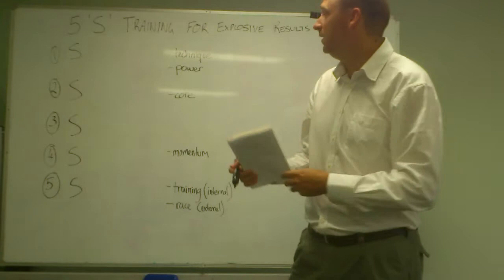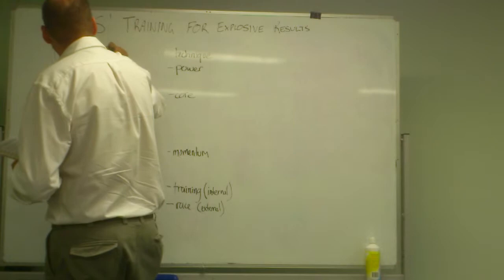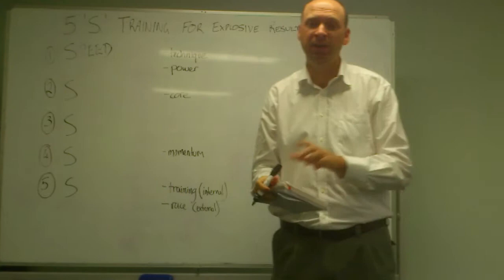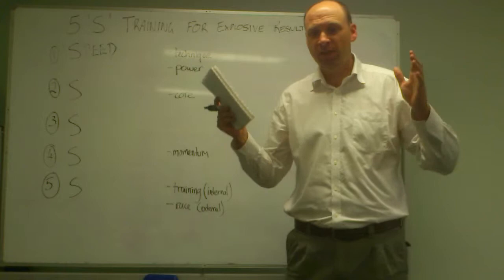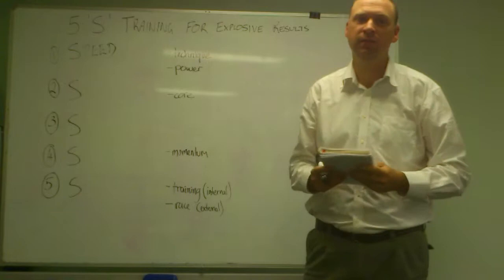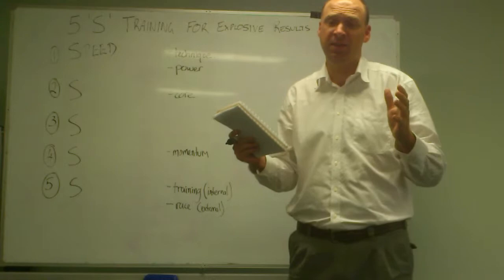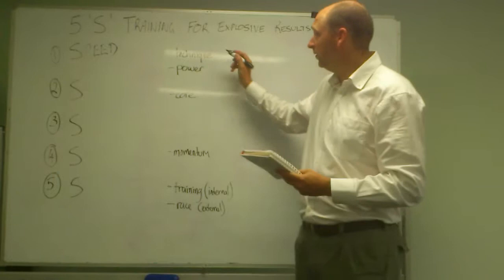The first S is speed. In BMX, speed is essential because BMX is basically a sprint. It goes over 30, 40 seconds. You've got the random gate start, and you need that explosive speed out of the gate. You need speed going down the straights and around the corners. It's necessary in a sprint - obviously, speed.